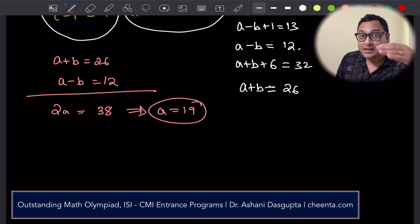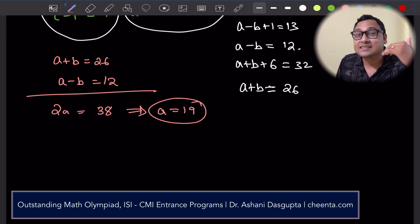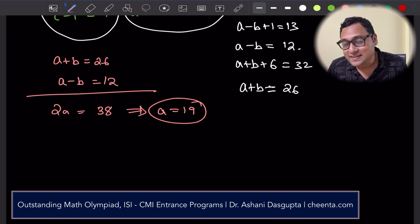Now can you check the remaining three equations, three cases, and tell me which one fits this description that a, b, c are positive integers and a is greater than c? Please put it in the comment section.